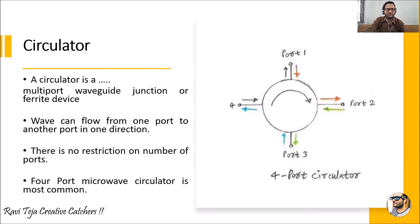A circulator is used for the distribution of the microwave signal. The microwave signal flows from one port to another port only in a single direction. This is somewhat similar to an isolator where the flow of a microwave signal is in a single direction. In a circulator, each port allows the signal to the other port in one direction, and there is no restriction on the number of ports — there are three-port and four-port circulators.